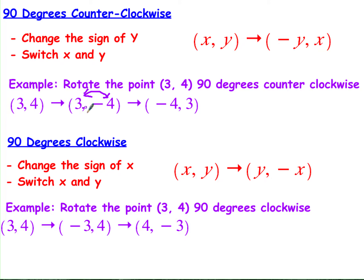For 90 degrees clockwise, it's very similar except we're still going to switch around our x and y, but first we change the sign of our x instead of our y. So if I'm going 90 degrees clockwise, I change the sign of my x, and then I switch my x and y around. So if I have (3, 4), I change the sign of my x to get (-3, 4), then swap to get (4, -3). We'll also show what we do for 180 degrees in a bit — that's the easiest one. Make sure you have this down before you move on.